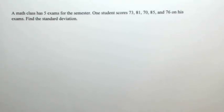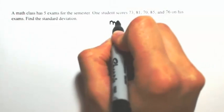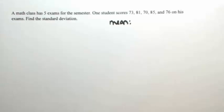So in finding the standard deviation, the first thing we want to do is find deviation from the mean. So I guess that means we should find the mean. The mean of this data is going to be when we add everything up and then divide by the number of exams, which is five.